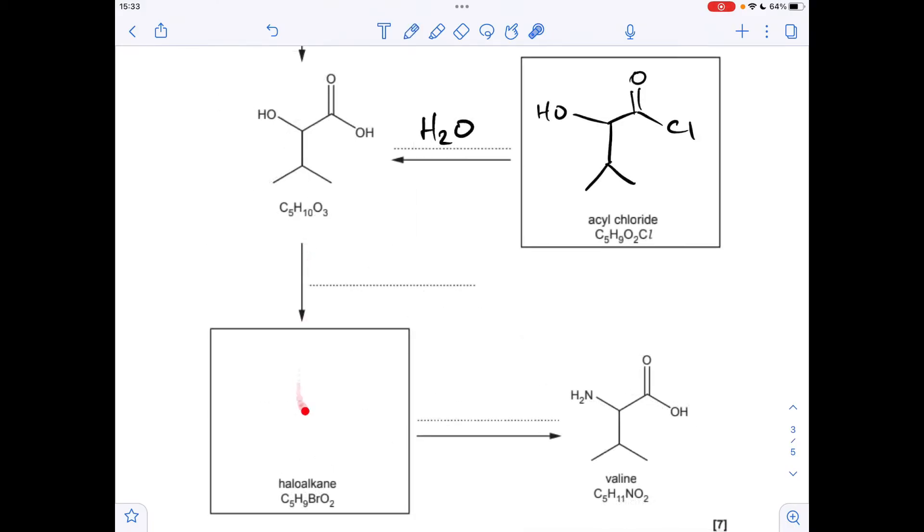So moving on to the bottom half of the flow chart. So if we focus on, we need to get to valine. So we need an NH2 group here. There's no change around there or there. So what needs to be in here? Well, we know it's a haloalkane. It's actually a bromoalkane. So we need to stick a bromine here. So that's the answer for that part. How do you bring about that change? You need to react the alcohol with sodium bromide in this case and sulfuric acid. So for the final part now, how do you go from a haloalkane to an amine? You react it with ammonia in ethanol.